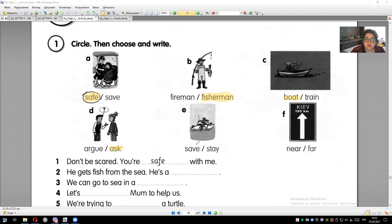We already said that save means to rescue. And the last picture - Kyiv. We see 100 kilometers. Is it near or far? Near means nearby, far means far away. Yes, it's far.